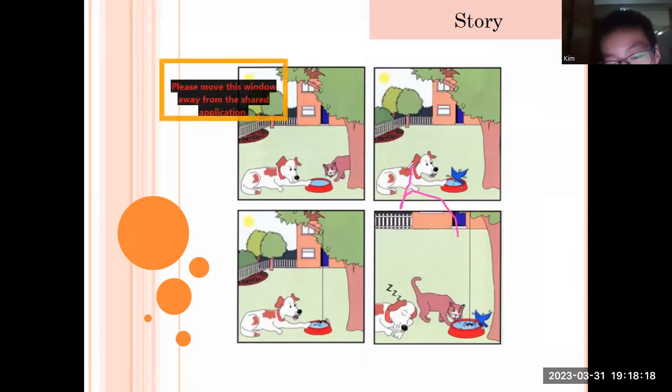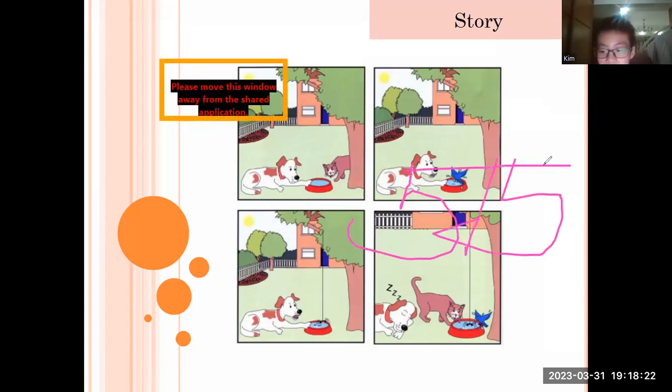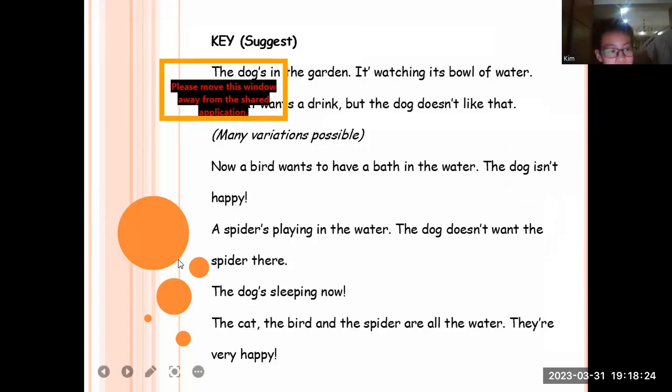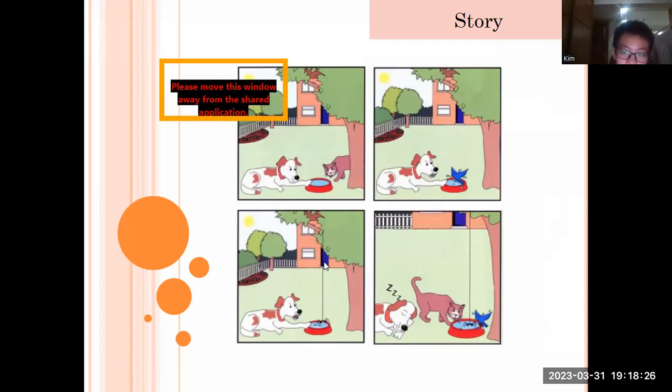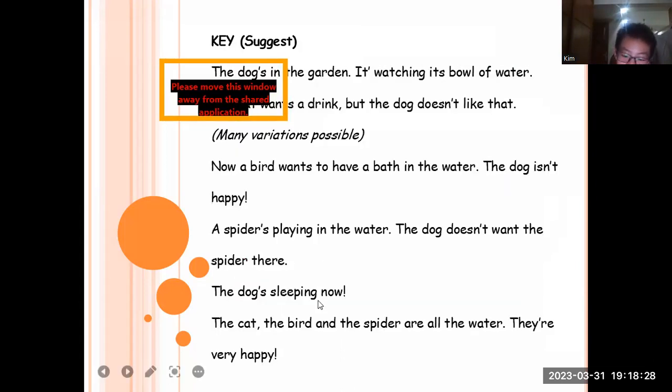Okay, so for that one, you still got five out of five in telling the story. Okay, so I'm glad because there's no chicken in the story. Okay, so here Kim, so this is the suggested answer. The dog's in the garden.